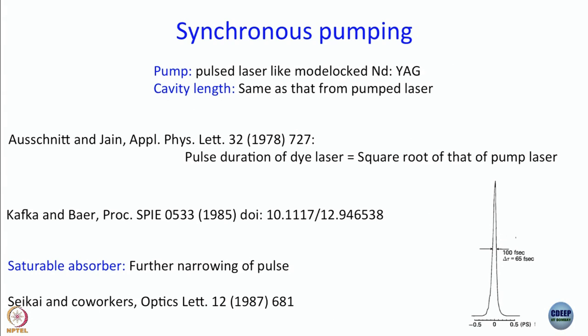From 220 femtoseconds it has gone down to 65 femtoseconds. Think of a 220 femtosecond pulse — the base would be something like maybe 400 femtoseconds. From there to say 200 femtoseconds is the time required for light to actually get absorbed even of the intense pulse and to have an increasing amount of bleaching. When the threshold is reached, then only the pulse propagates — that's why the pulse is narrower. Synchronous pumping with a saturable absorber was for a long time the state of the art for producing short pulses.